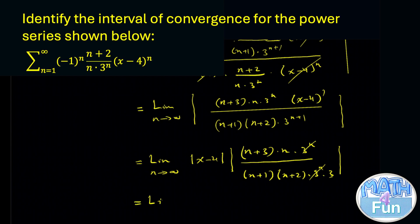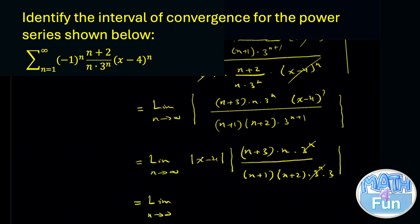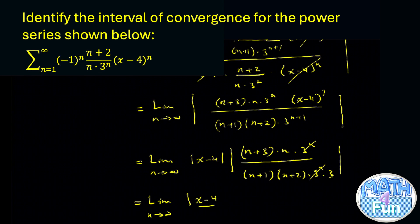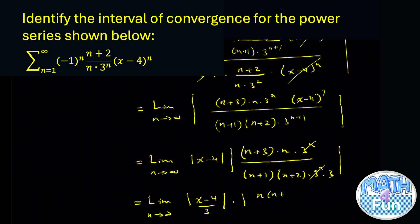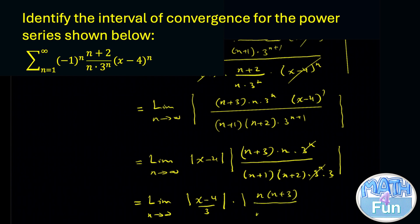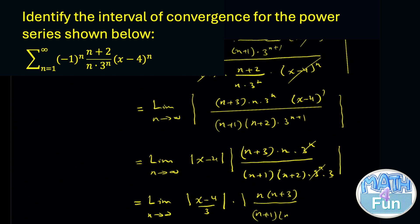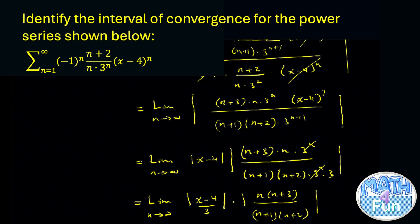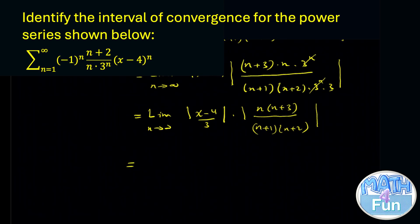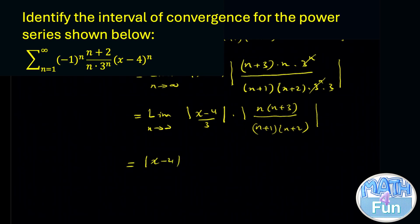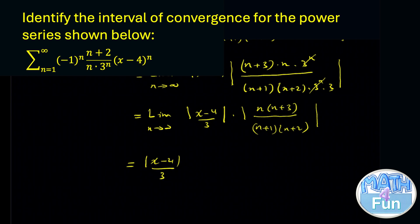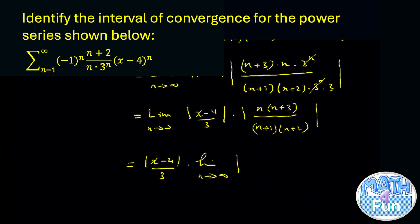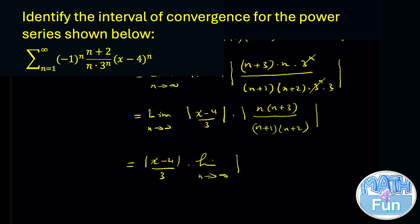So it equals the limit as n approaches infinity of the absolute value of x minus 4 over 3, multiplied by n times n plus 3, over n plus 1 times n plus 2. Since x minus 4 over 3 has nothing to do with n, we can write absolute value of x minus 4 over 3, times the limit.